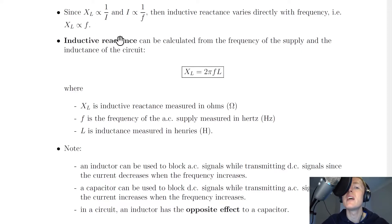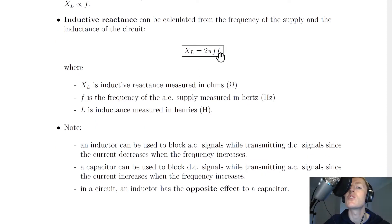So it can be shown that inductive reactance can be calculated from the frequency of the supply and the inductance L of the circuit, where XL is equal to 2 pi FL, where XL is inductive reactance measured in ohms, F is the frequency of the AC supply measured in hertz, and L is inductance measured in henrys.